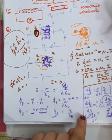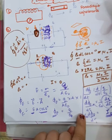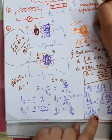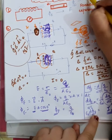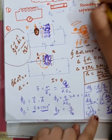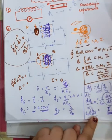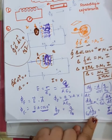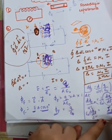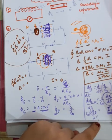So this is displacement current: I_D = epsilon-naught × d(phi_E)/dt. Earlier, in Faraday's laws, we talked about phi_B, the magnetic flux. Here we are talking about electric flux phi_E. In the next video, we will understand how the introduction of displacement current makes Ampere's Circuital Law consistent.